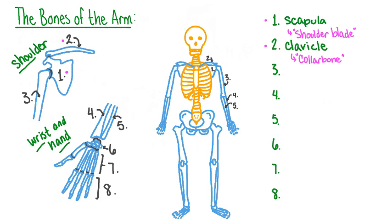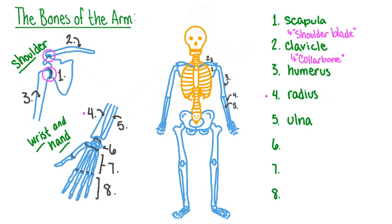The scapula is actually not attached to the bones of the back, but instead floats above them. The scapula is attached to the torso by its connection with the clavicle, and it is also attached to the bone of the upper arm, called the humerus. The humerus extends from the shoulder to the elbow. The part of the arm between the elbow and the wrist contains two long bones. The bone on the thumb side is called the radius, and the bone on the pinky-finger side is called the ulna.